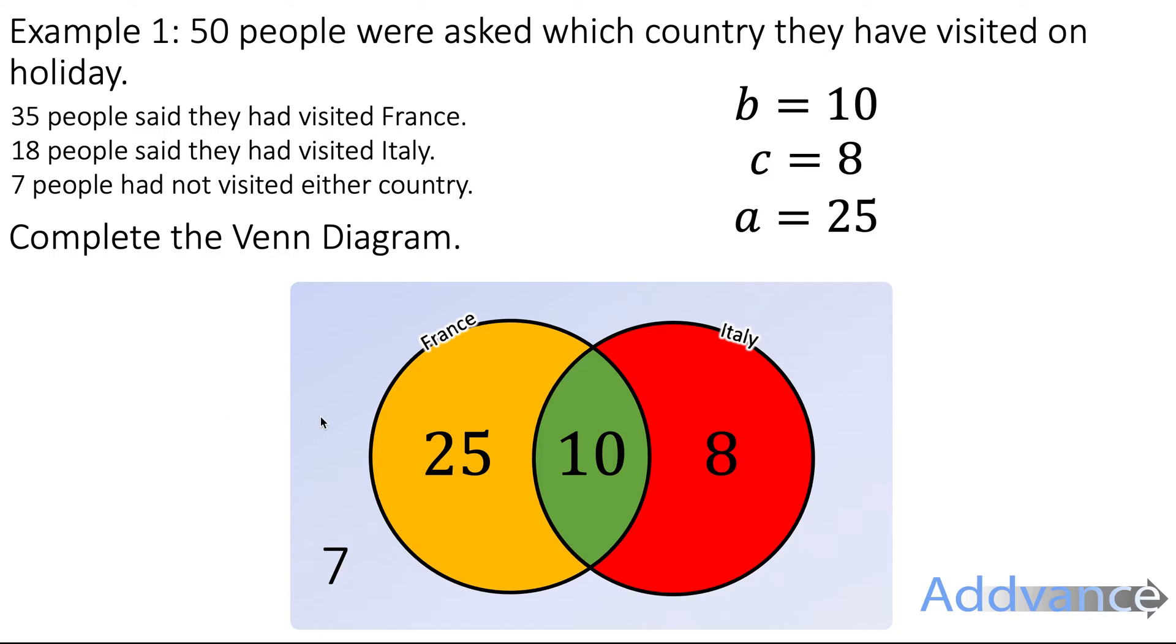Those are the final answers to the question. That is the number of people who have visited neither country. People who have just visited France is 25. 10 people are visiting both. And 8 people are visiting just Italy.